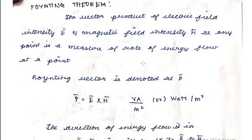Welcome to this lecture on the Poynting Vector and Poynting's Theorem. Energy is transferred from the transmitter to the receiver by means of an EM wave in free space. The power flow in any medium can be obtained using Poynting's Theorem, which was developed in 1884 by English physicist John H. Poynting. The rate of energy transfer and the electric and magnetic field intensities of the travelling EM wave are related by Poynting's Theorem.